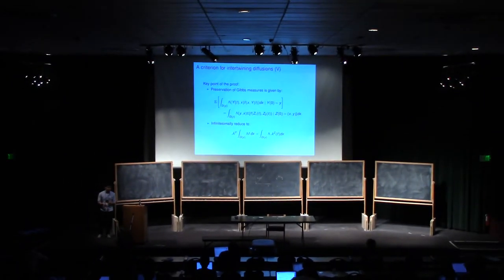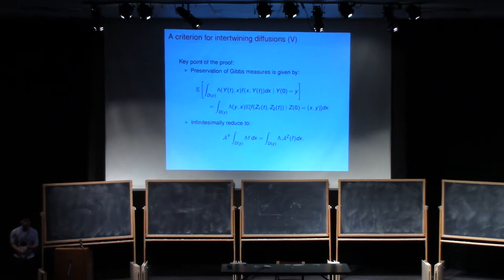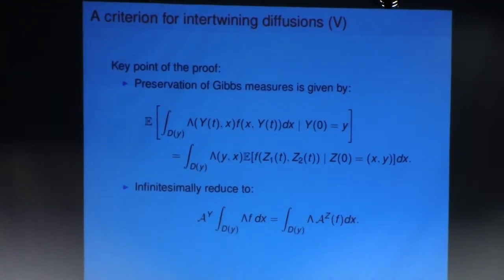And in fact, what you'll need to show there is that for any function, somehow this identity holds. Which means that if you evolve the process and apply the function, that's the same thing as just evolving the top level of the process and finding the expectation of the function.